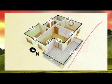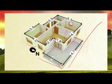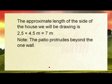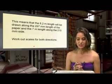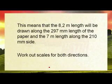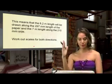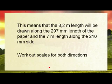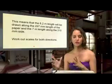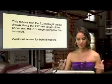Where do we get that from? Over here — 4.2 plus 4 is the width of the house, and that gives us 8.2 metres. This means the 8.2 metres length will be drawn along the 297 millimetres side of the A4 page, and the 7 metres width will be drawn along the 210 millimetre side of the A4 page.